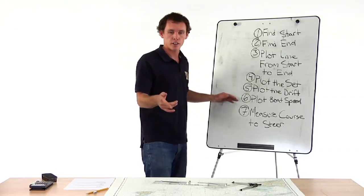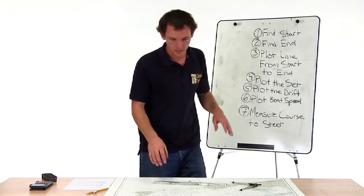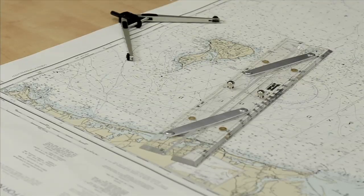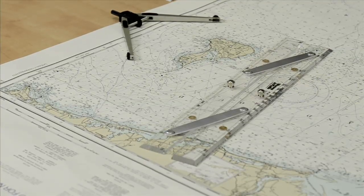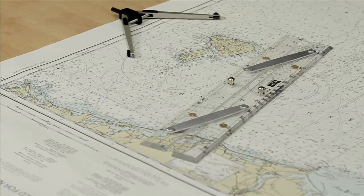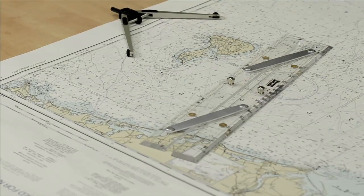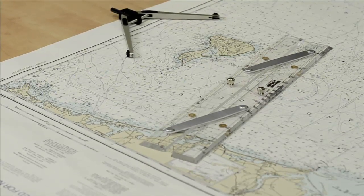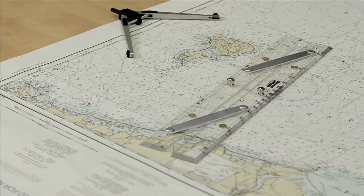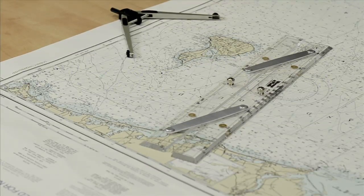Let's look at it on the chart. The problem says: what is the true course to steer between the entrance to Great Salt Pond and the entrance to Quono Pond, if you're turning for 8.5 knots and allowing for a current of 247 degrees at 1.2 knots?